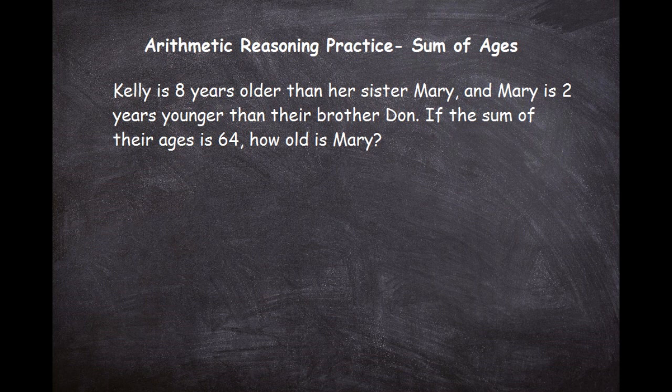We're looking for the sum of the ages — we know that all three of them together have to equal 64. This is best done with one variable. When you see this type of problem, you immediately need to know that a variable is going to take the place of the characters. We'll try to do it with one variable to make it easier. On one side of the equation we have 64, and on the other side we'll have the variable representing the three characters. We'll go with x as the variable.